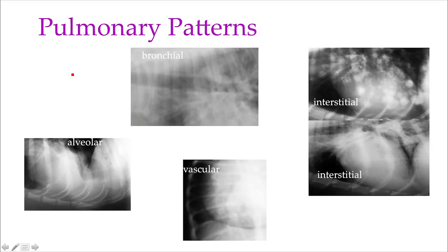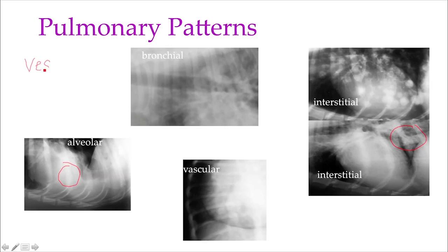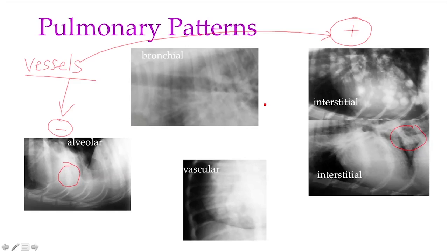The quick and easy way to distinguish interstitial from alveolar — though not one hundred percent — is to look at the affected area of lung and ask yourself: can I see the vessels, even with difficulty? If yes, it's interstitial. If no, it is alveolar. This is not absolute because in early alveolar disease you can still see the vessels, but the error is minimal.